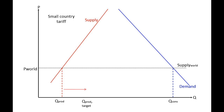The government now wants to increase domestic production, so they set up a target — this is the quantity they want to achieve. When we look at this, we see that the marginal cost for the last produced unit at the target quantity is much higher than the world market price. The producer reaching that target unit must have that marginal cost covered.